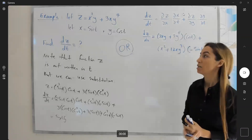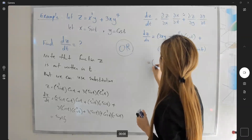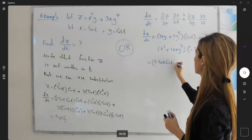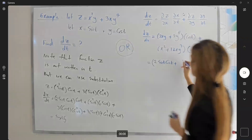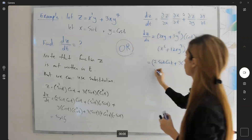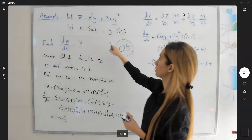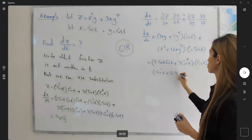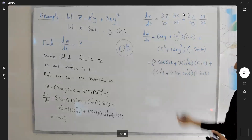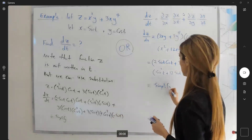We're not stopping here — everything must be written in terms of t. With substitution, 2xy becomes 2 sine t cosine t, plus 3 cosine to the fourth t, multiplied by cosine t, plus sine squared t plus 12 sine t cosine cubed t multiplied by negative sine t. If you simplify these two results, you get the exact same answer — the two methods are equal to each other.